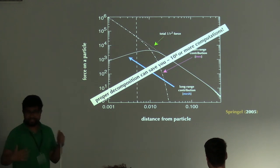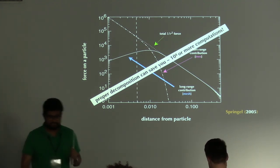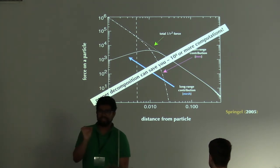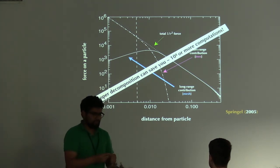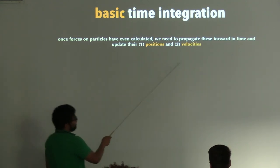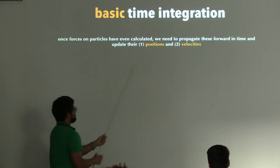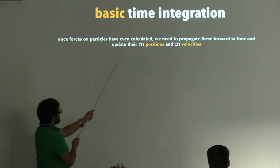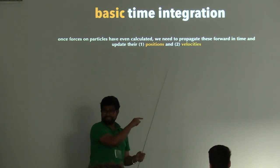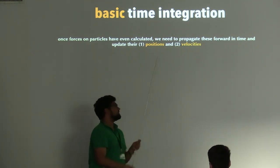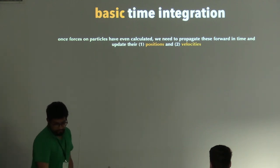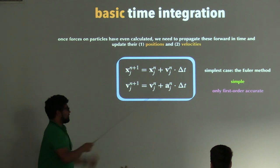Coming to the end of the technical details before moving on to the first hands-on session: once forces are calculated, you need to move the particles by integrating them forward in time. You initialize mass, position, and velocity — basically your distribution function f(x, v, t) — then update positions and velocities over time steps. The simplest approach is the Euler method, where for particle j the position vector x is updated step by step.